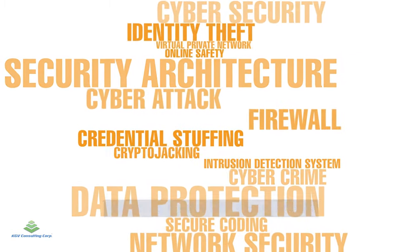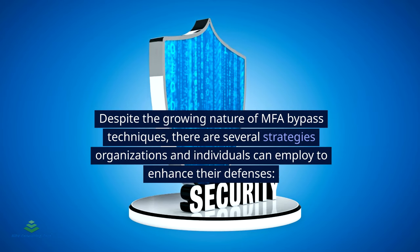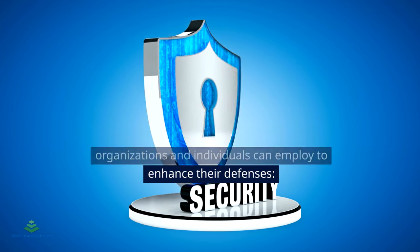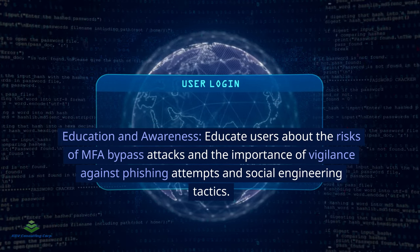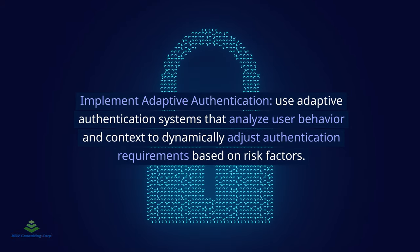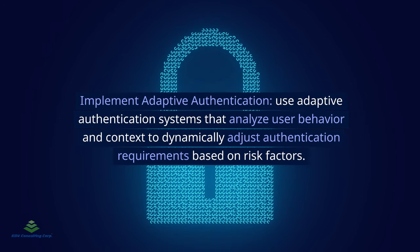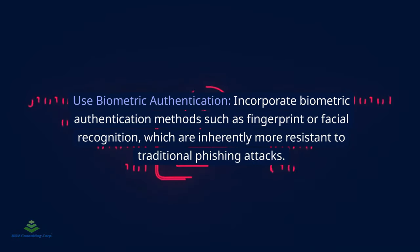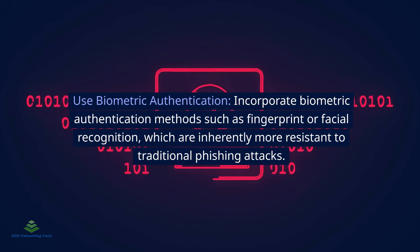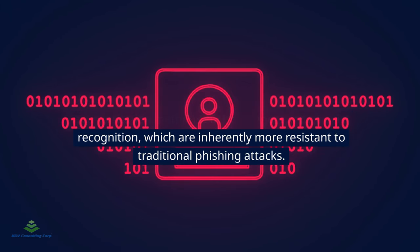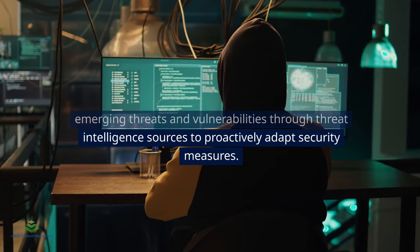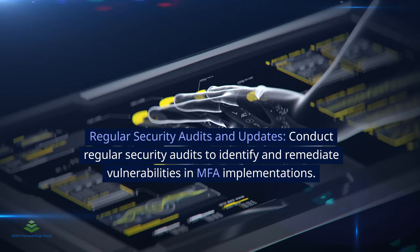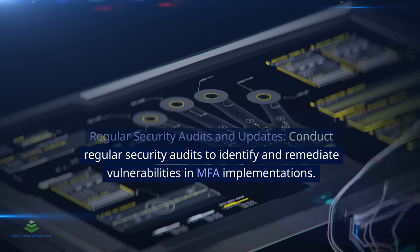Protecting against MFA bypass attacks: despite the growing sophistication of MFA bypass techniques, there are several strategies organizations and individuals can employ. These include educating users about the risks of MFA bypass and vigilance against phishing and social engineering; implementing adaptive authentication systems that dynamically adjust requirements based on risk factors; incorporating biometric authentication such as fingerprint or facial recognition, which is more resistant to traditional phishing; employing threat intelligence to stay informed about emerging threats; and conducting regular security audits to identify and remediate vulnerabilities in MFA implementations.